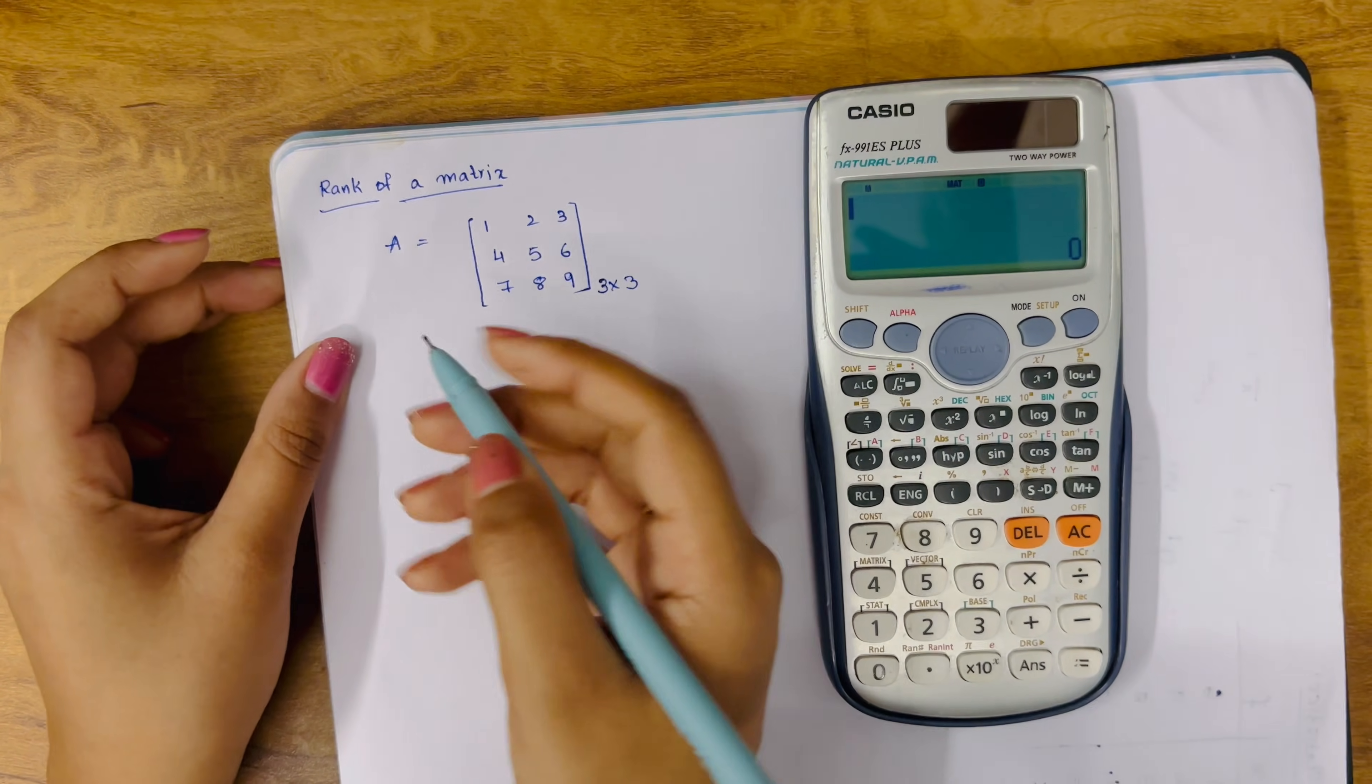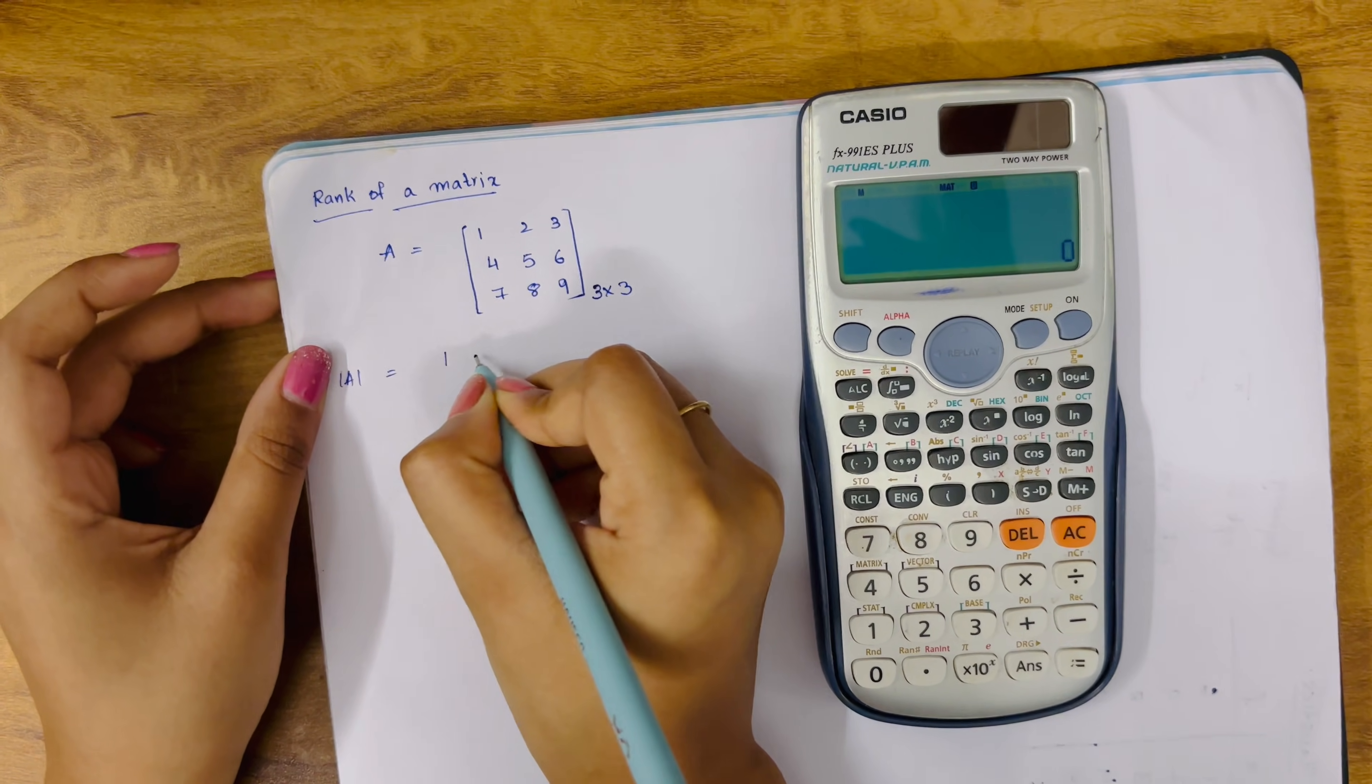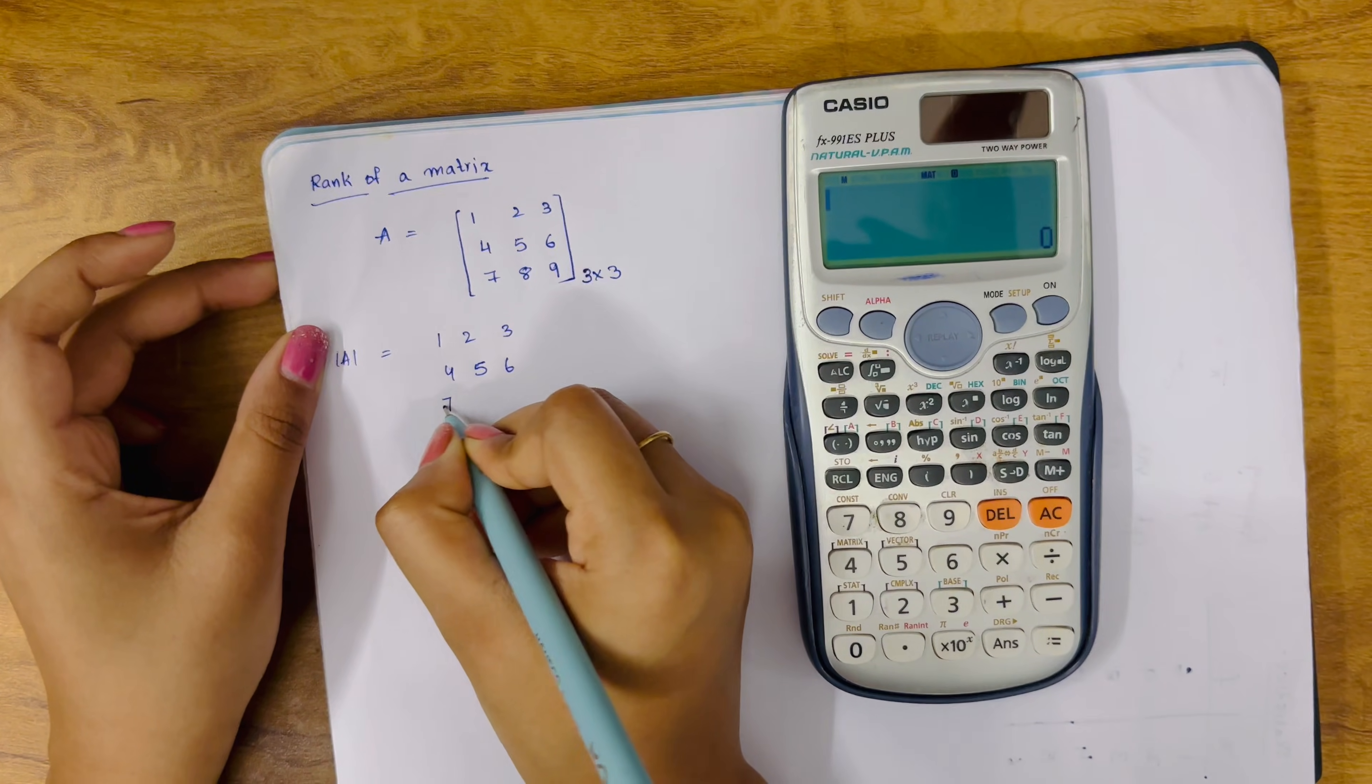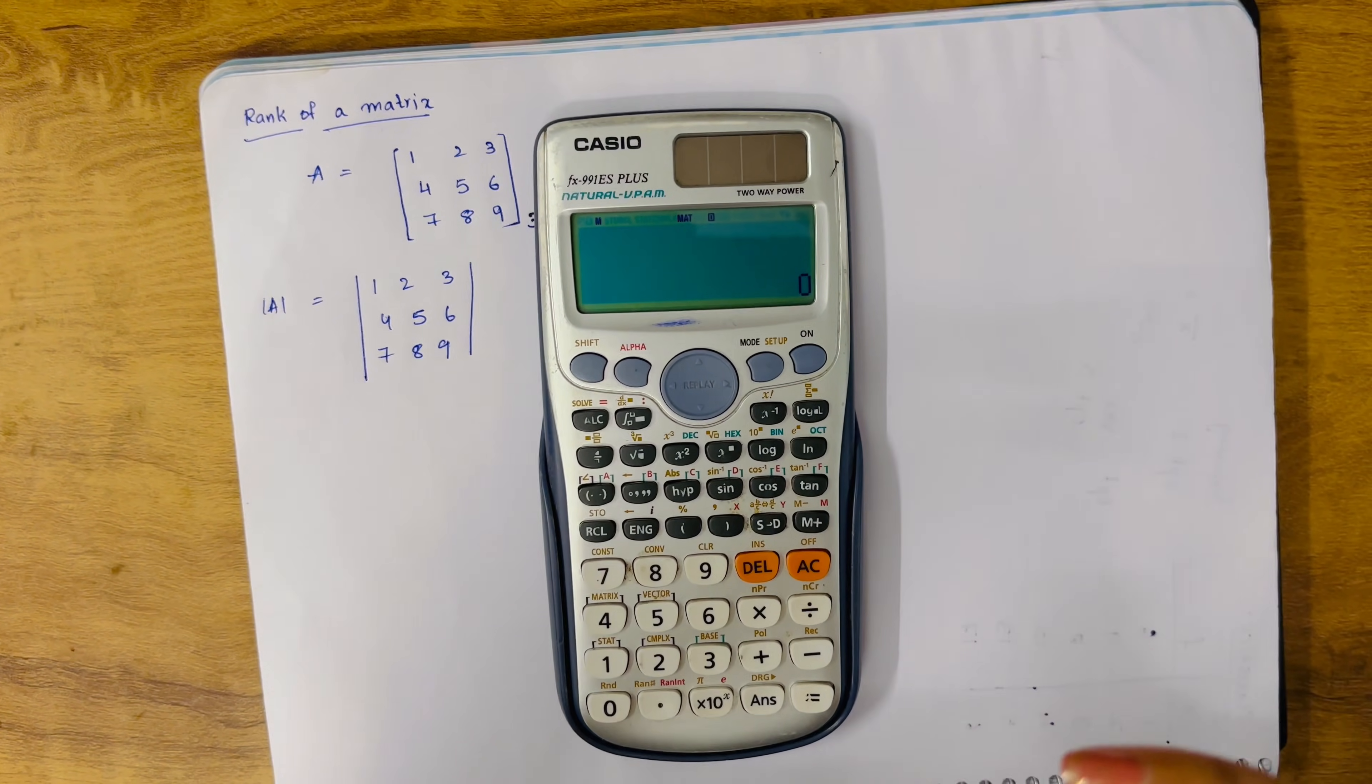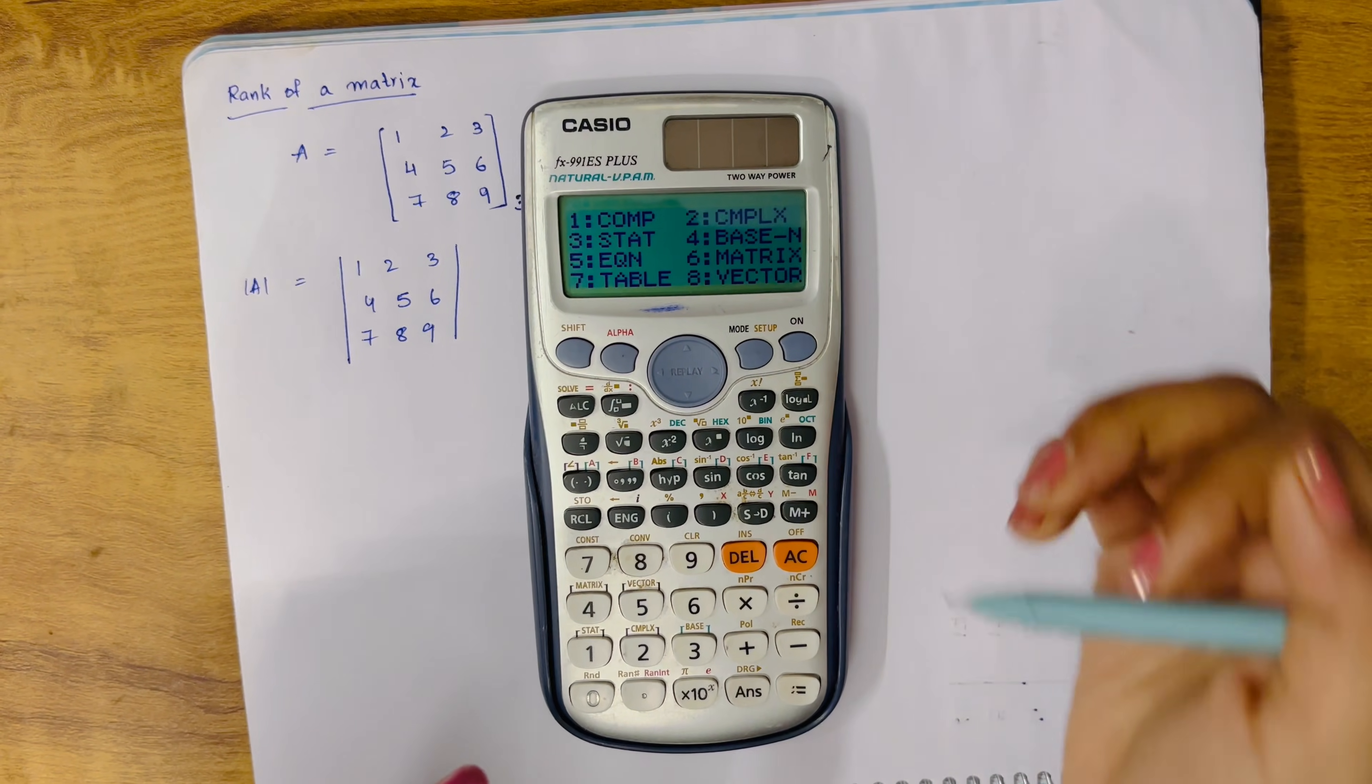So that is det of 1, 2, 3, 4, 5, 6, 7, 8, 9. Now we are using this calculator to calculate it. You know the process: mode, setup, matrix option 6.